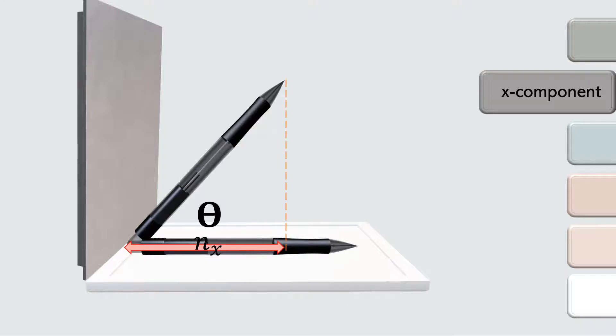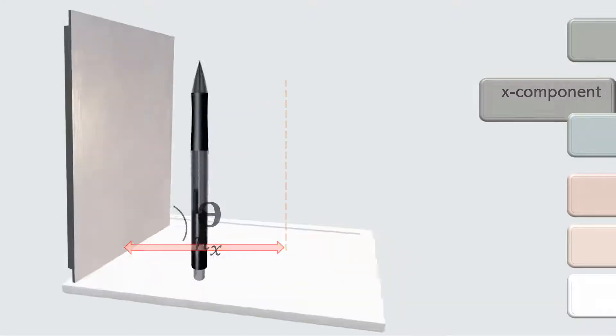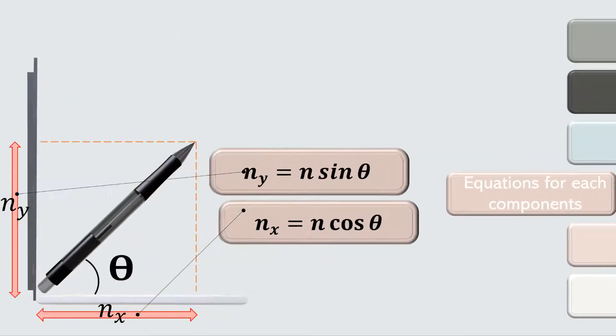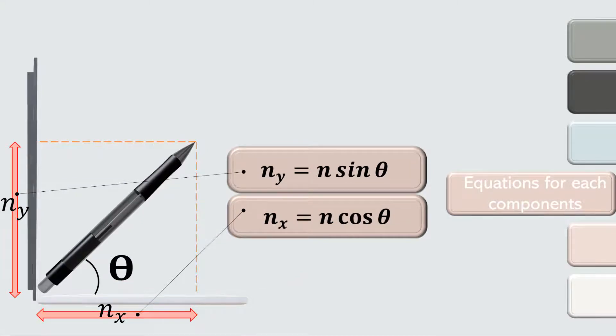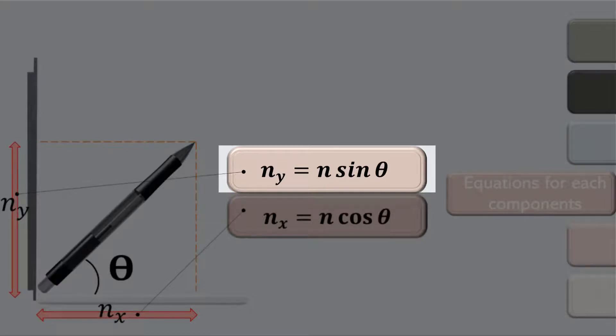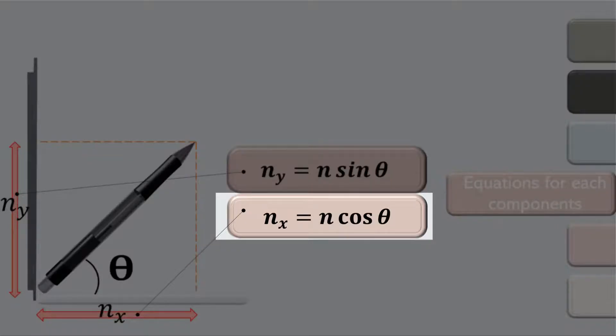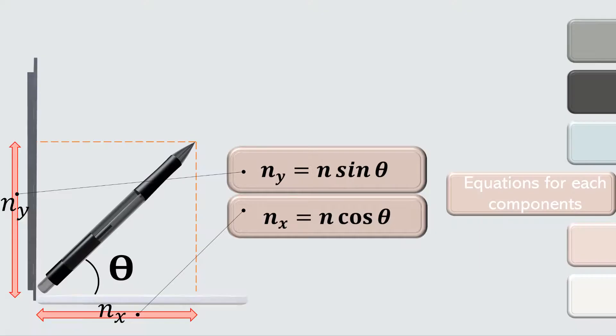And when we view this vector facing the y axis, the magnitude at the y component is only this much. So how do we calculate these vector components? Here are the equations for both. For vector resolve at y axis, it is n_y equals to n sin theta. And for vector resolve at x axis, it is n_x equals to n cos theta. That's the equation used to resolve any vector.